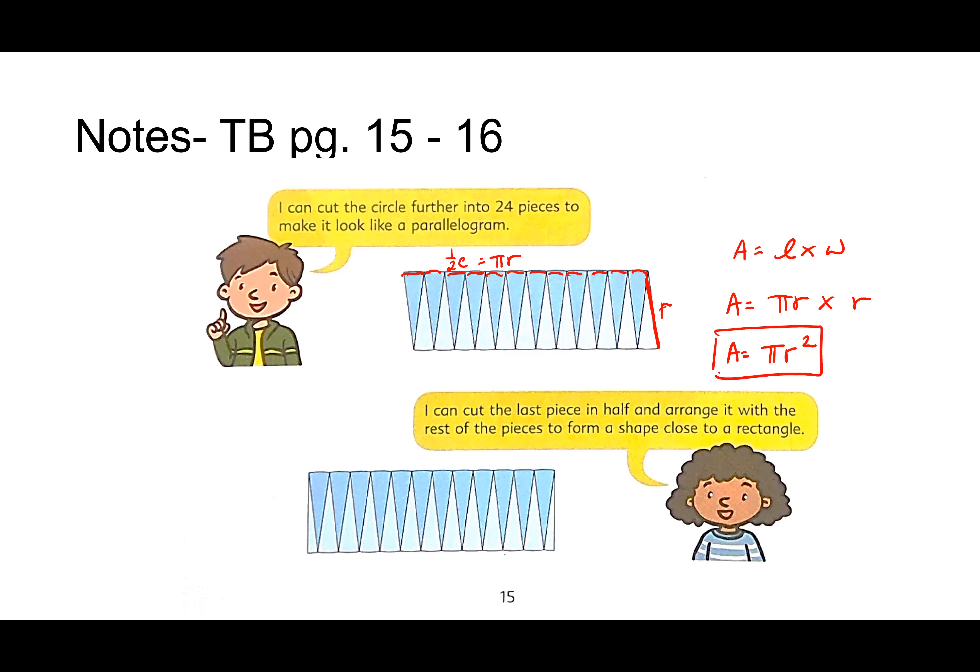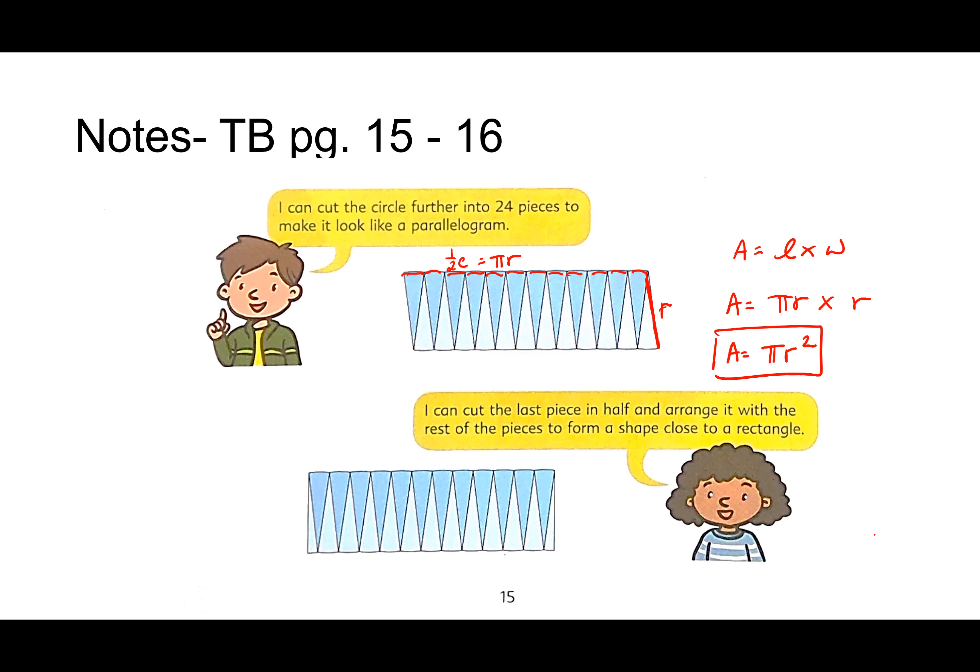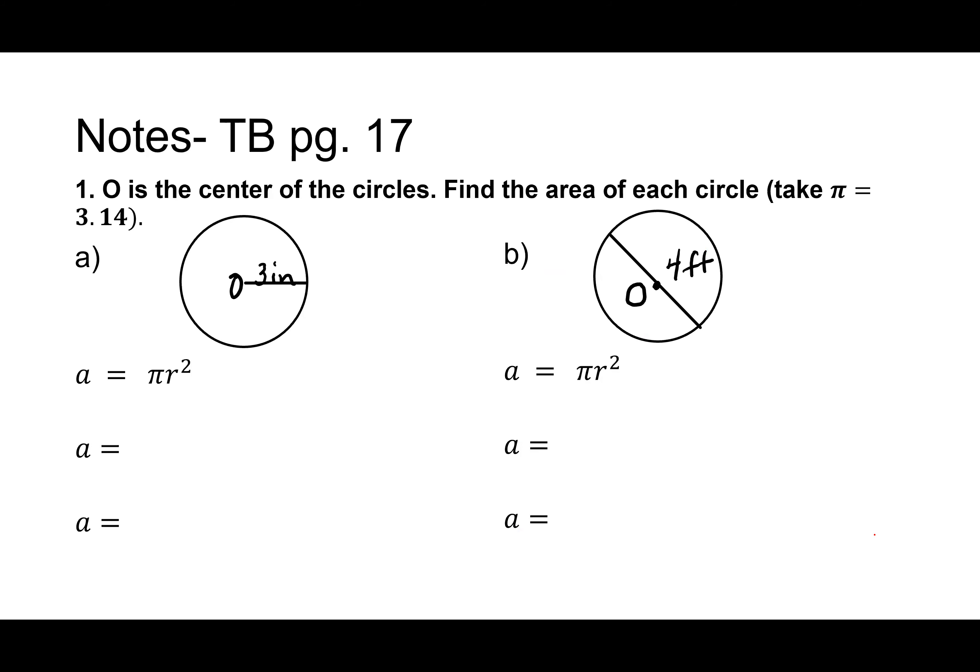All right. So this is the formula that we're working on memorizing today. Area equals pi R squared. Wait a second. Oh, my gosh. Should I just say area equals 2 pi R? Okay, I'm going to have to cut that out on the video. Area equals what? Sometimes the words that come out of my brain and down through my mouth don't match. Area equals pi R squared.